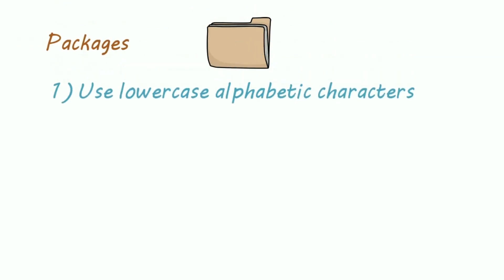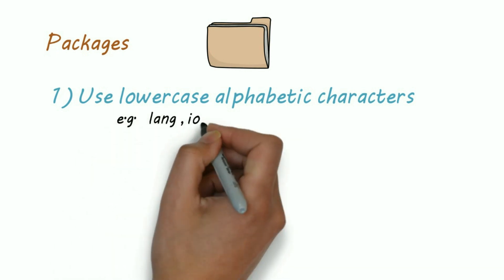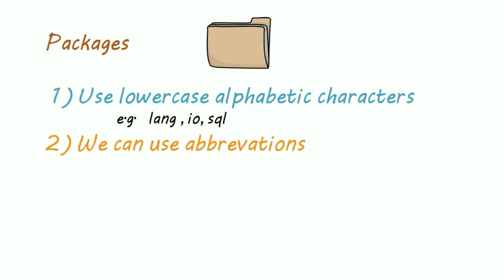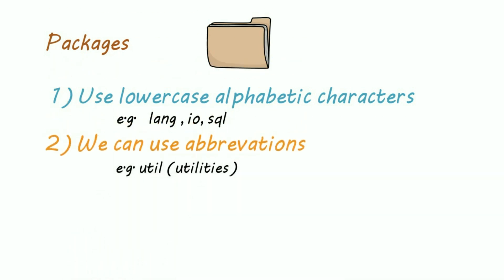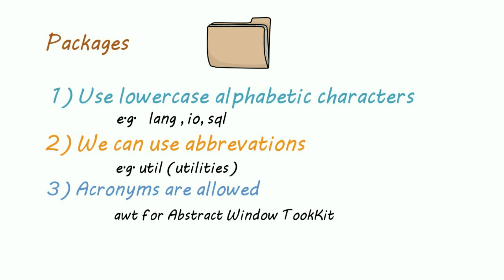For packages, use lowercase alphabetical characters — for example, lang, io, sql. We can also use abbreviations, for example util for utilities. Acronyms are also allowed, for example awt for Abstract Windows Toolkit.